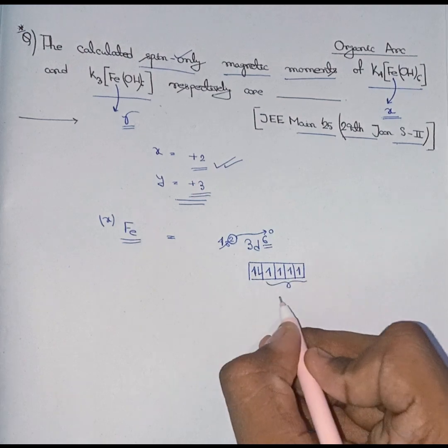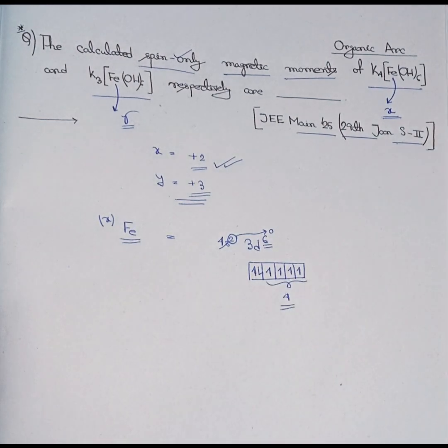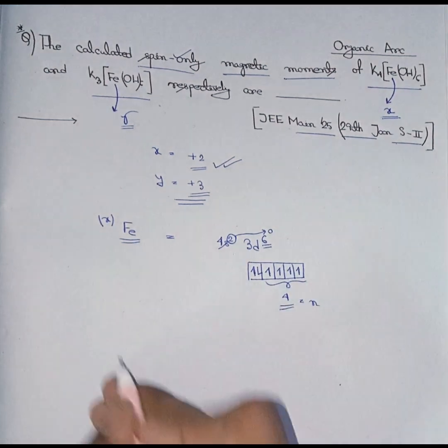So here a total of 4 unpaired electrons left. And we take the value of unpaired as n. So here the value of n is 4.